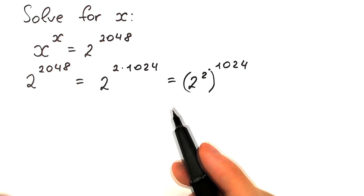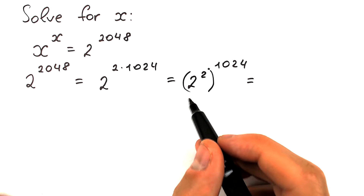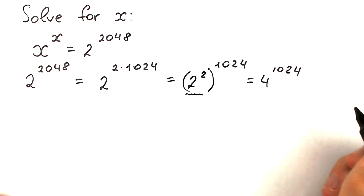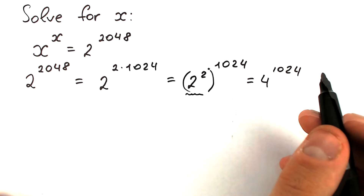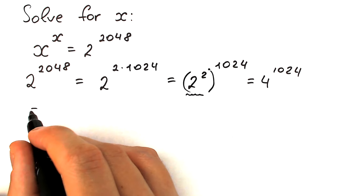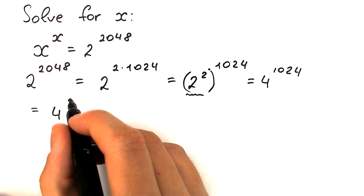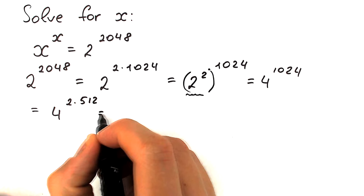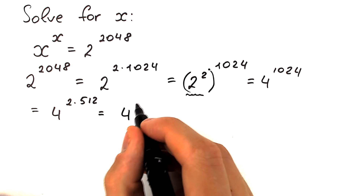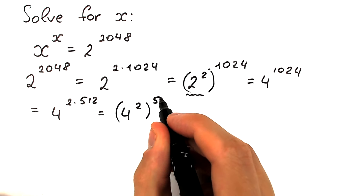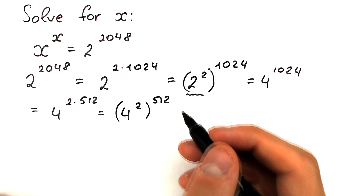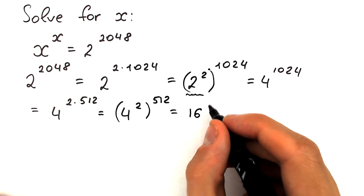So 2 to the power 2, which is 4, gives us 4 to the power 1024. Now let's do this step once more. Write 1024 as 2 times 512, so we have 4 to the power 2 times 512. Bringing the 2 inside parentheses, we get 4 squared raised to the power 512. Since 4 squared equals 16, we now have 16 to the power 512.